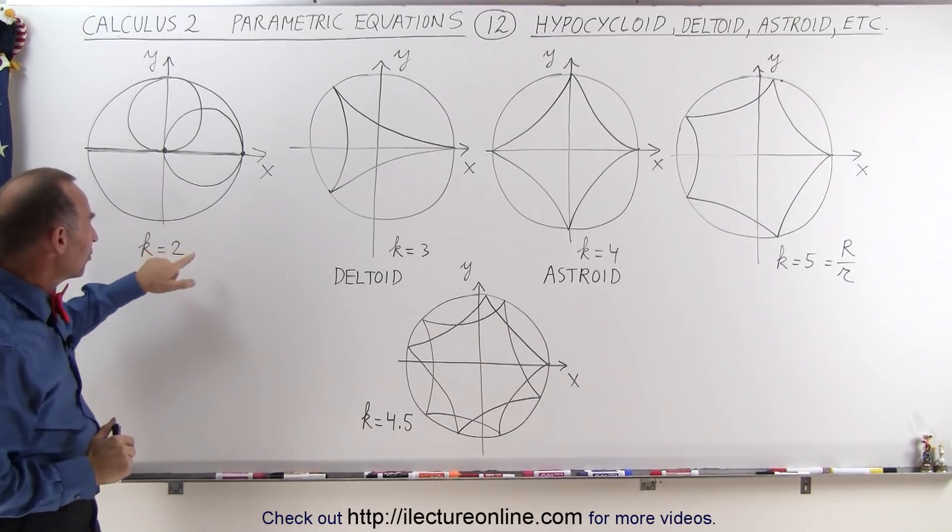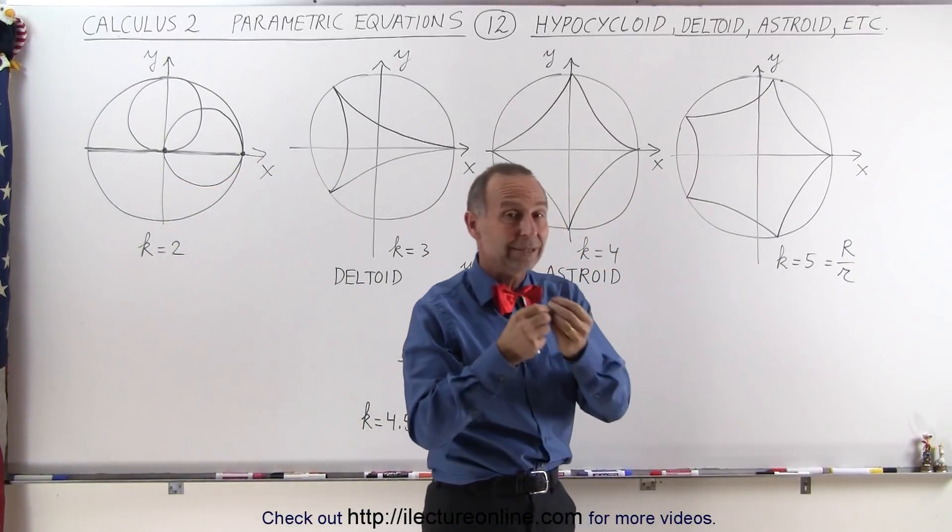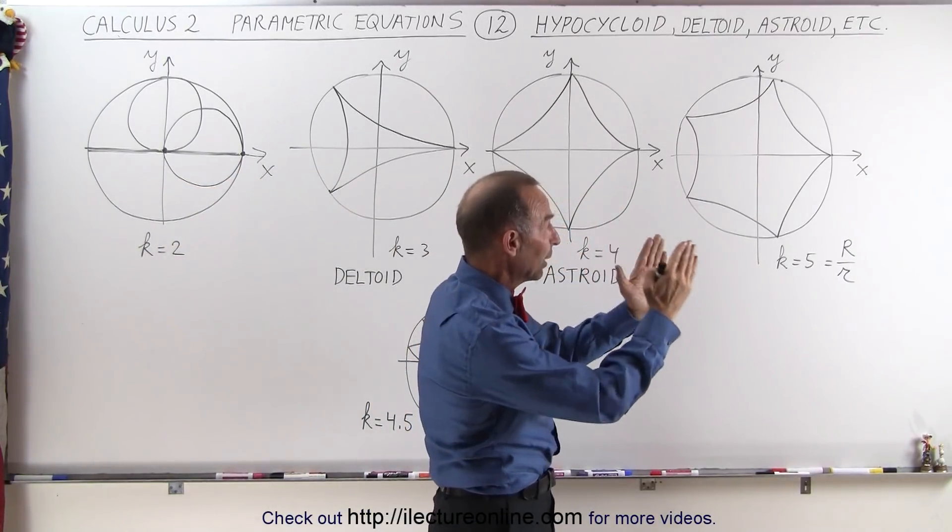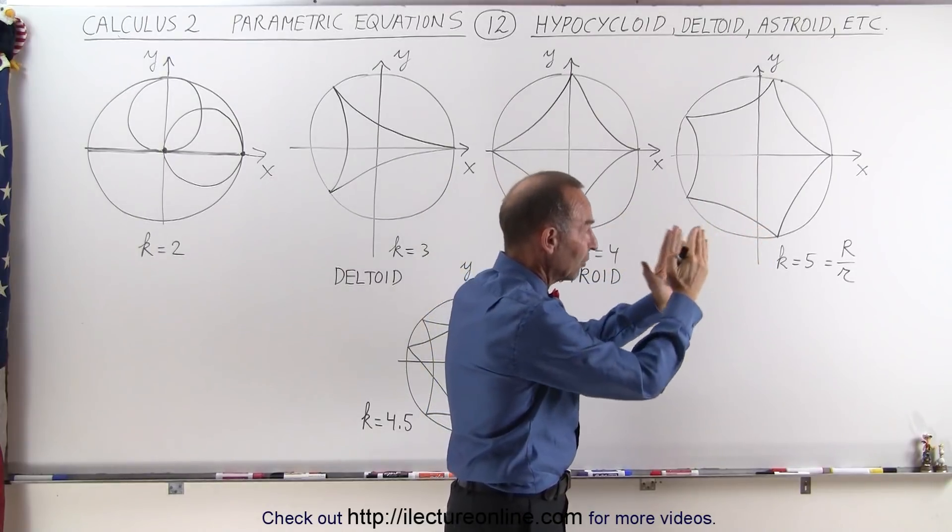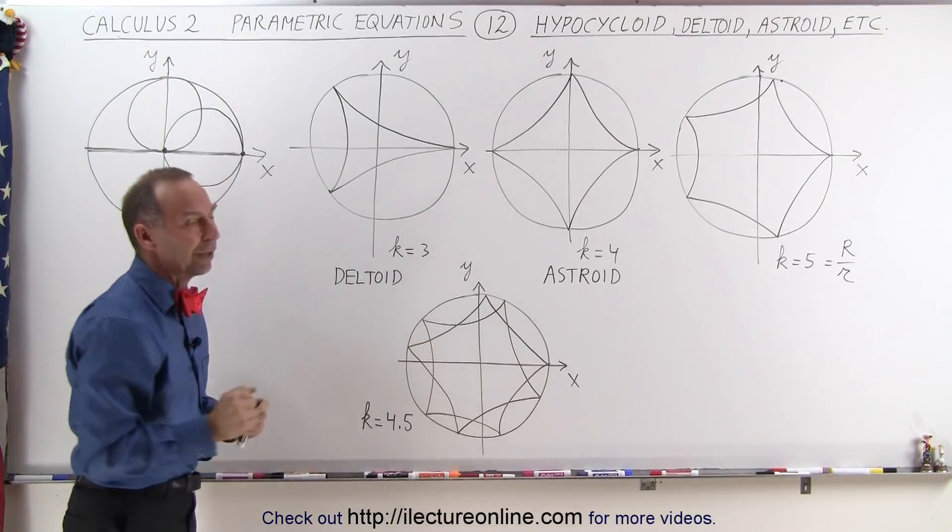Notice for different ratios k equals 2, k equals 3, k equals 4, k equals 5. Remember that k represents the ratio of the radius of the big circle divided by the radius of the small circle. Notice the different kind of patterns that you generate.